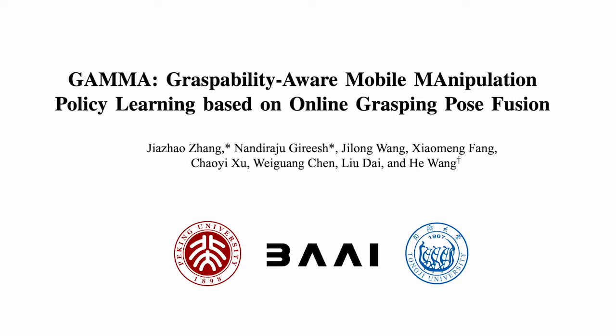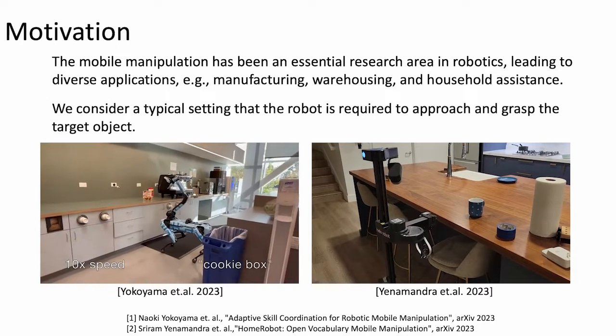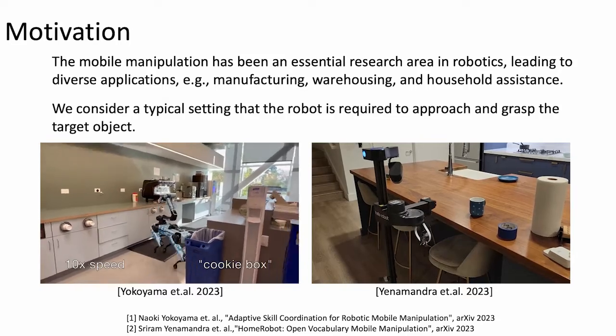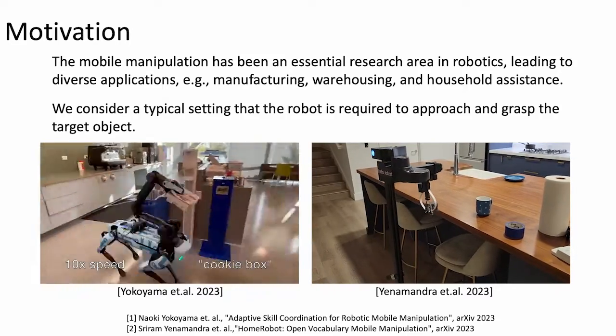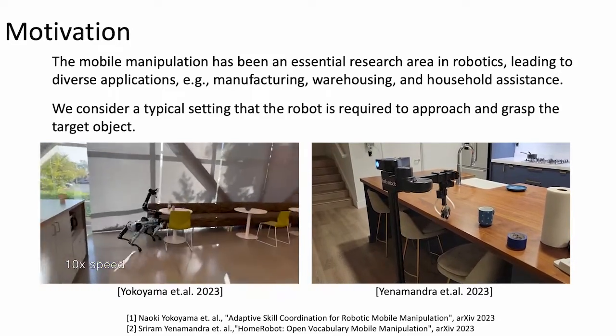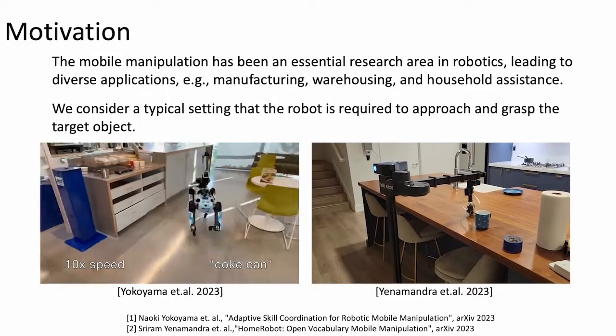In this video, we introduce our work Gamma: Graspability Aware Mobile Manipulation Policy Learning based on online grasping pose fusion. Mobile manipulation is an essential research area in the field of robotics, leading to diverse applications in manufacturing, warehousing, and household assistance.